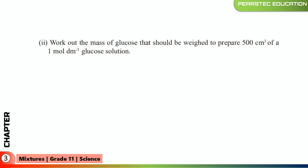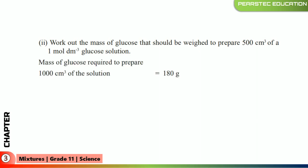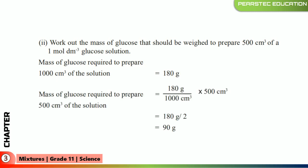Work out the mass of glucose that should be weighed to prepare 500 cubic centimeters of a 1 mole per cubic decimeter glucose solution. The mass of glucose required to prepare 1000 cubic centimeters of solution is 180 grams. To find the mass required for 500 cubic centimeters: if 1000 cm³ requires 180 grams, then 500 cm³ requires 180 divided by 2, which equals 90 grams. So 90 grams of glucose is required to prepare 500 cubic centimeters of solution.